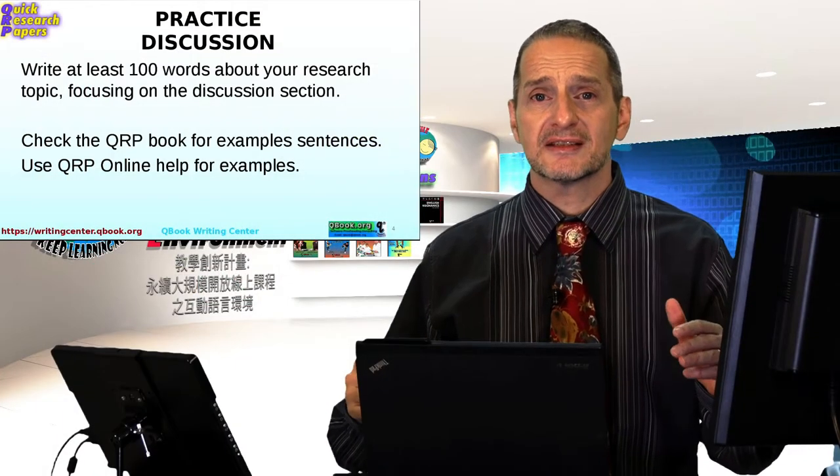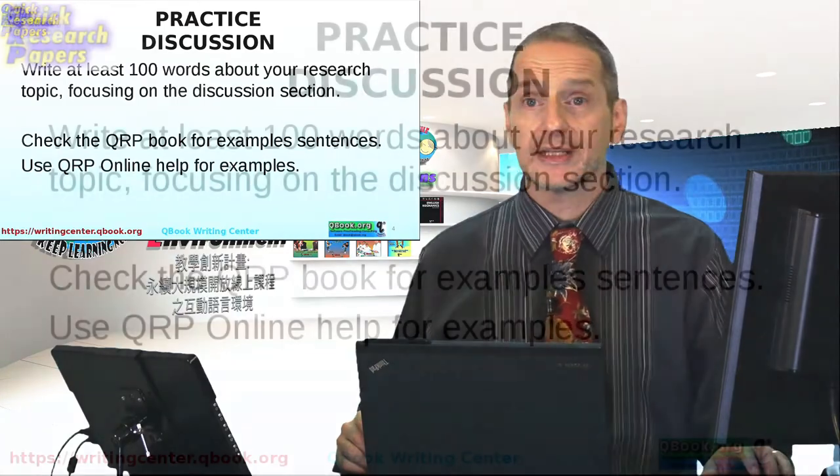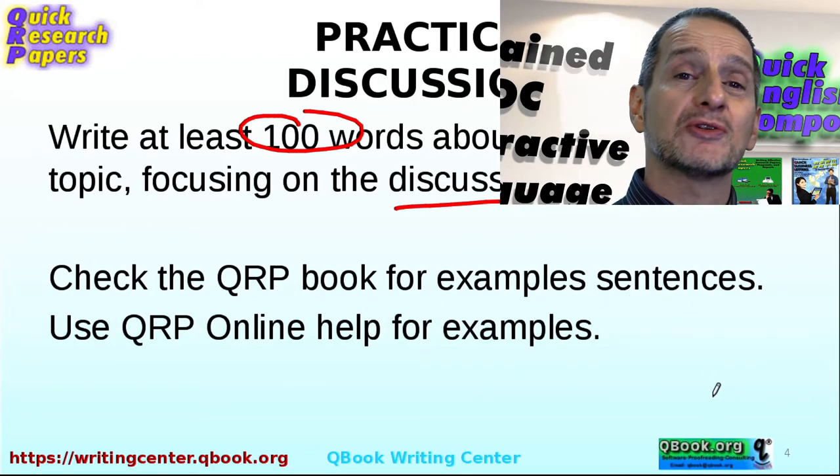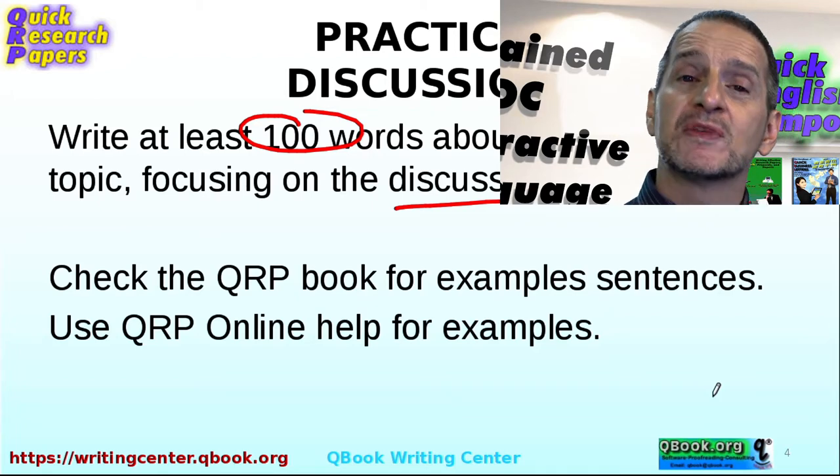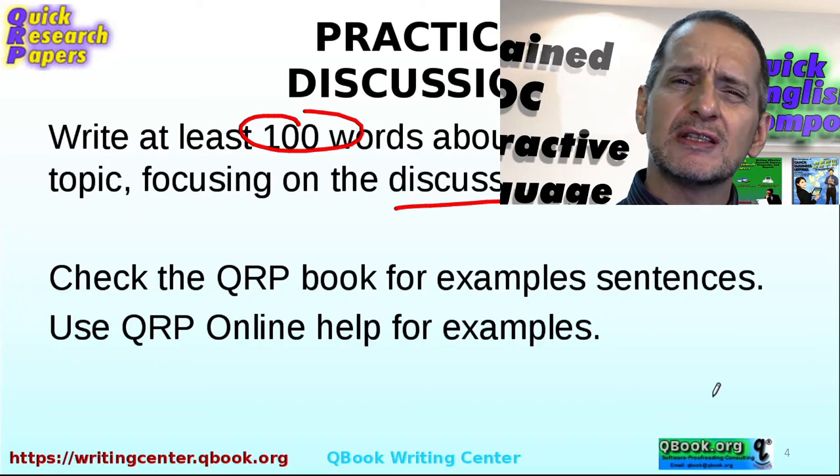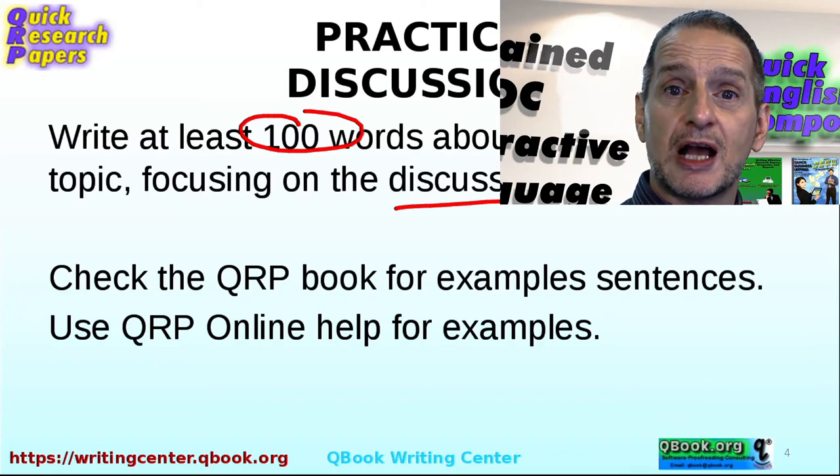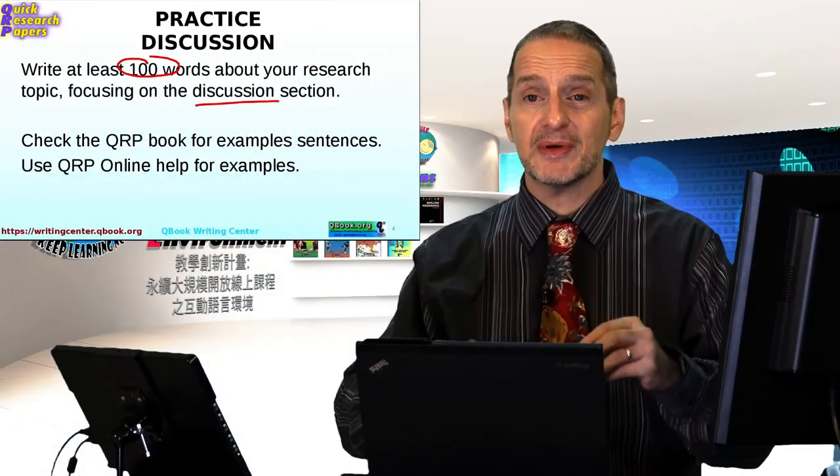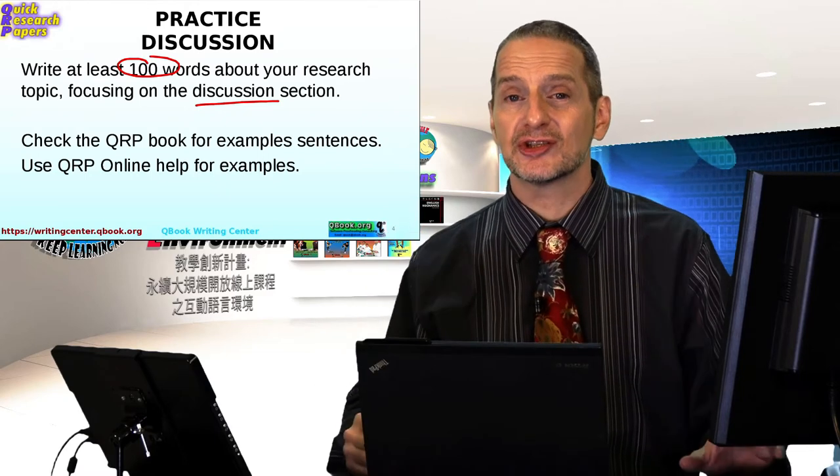Let's do a practice now for the discussion section. What I'd like you to do is use your QRP online writing software and write 100 words focused on the discussion. Remember, if you have a research topic for your actual research, that's great, you can use that. If you don't have a research topic because you're just practicing writing, then go ahead and see if you can find a topic in Google Scholar. Something you're interested in would be great. After you get a good topic, go ahead and think about it and then think what the discussion could be.